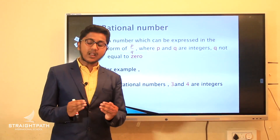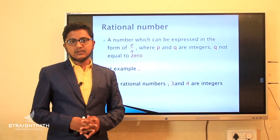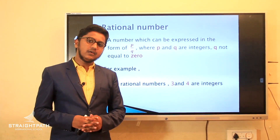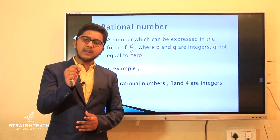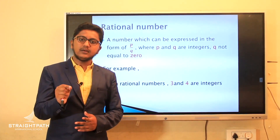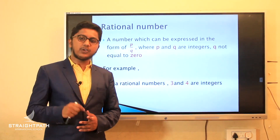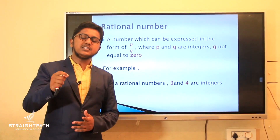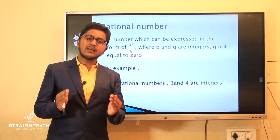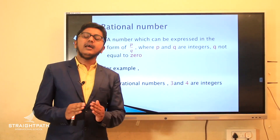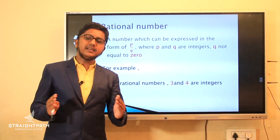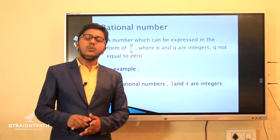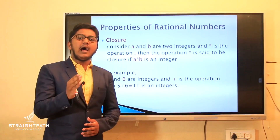If you take a whole number like 5, it is also a rational number. Why? Because 5 can be written as 5 by 1, which is in the form of p by q, where 5 is the numerator and 1 is the denominator. So we can conclude that every whole number, every natural number, and every integer is a rational number.